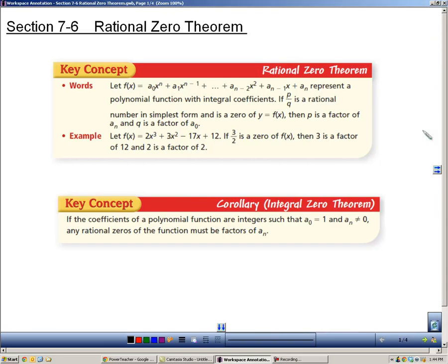Section 7.6 is about the rational zero theorem. This theorem is very useful to determine what factors there might be for a polynomial. Here you have a polynomial written out, and we're told that the number P over Q is a rational number, and it's a zero.